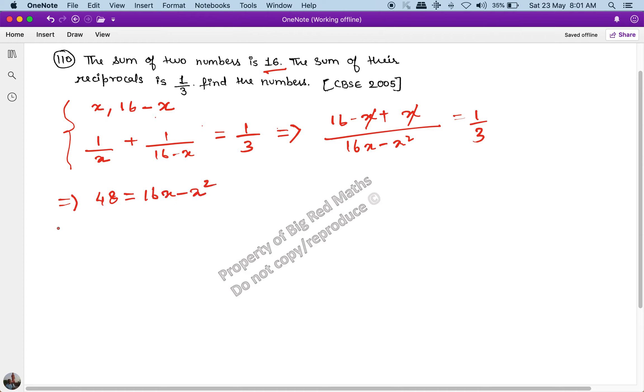If I solve this, then x square minus 16x plus 48 equals 0. We can factor this: x square minus 4x minus 12x plus 48. Taking x minus 4 common: x minus 4 into x minus 12 equals 0. The two values we have got are x equals 4 and x equals 12.